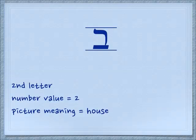The second letter we're learning today is the Bet, and it has a number value of two. Its picture meaning is a house.